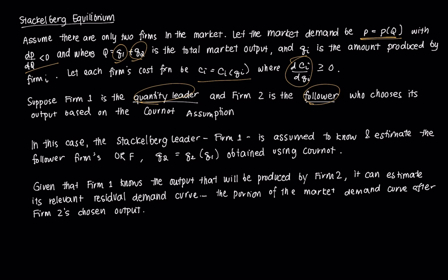Firm 1 is the quantity leader and firm 2 is the follower. The follower firm chooses its output based on the Cournot assumption, but firm 1 behaves differently. The Stackelberg leader, firm 1, is assumed to know and estimate the follower firm's ORF — so Q2 is some function of Q1, the level firm 1 is expected to set, obtained using the Cournot approach. Given that firm 1 knows the output firm 2 will produce, it can estimate its relevant residual demand curve — the proportion of market demand remaining after firm 2 has chosen its output.